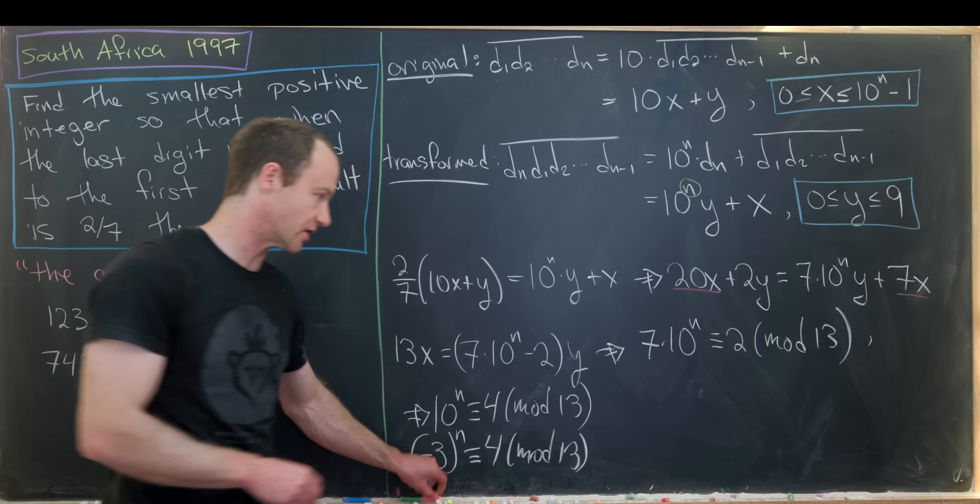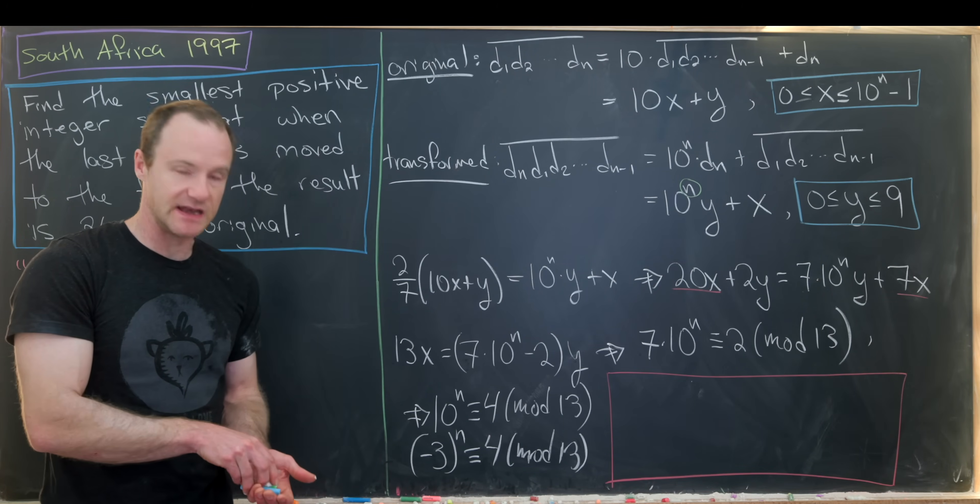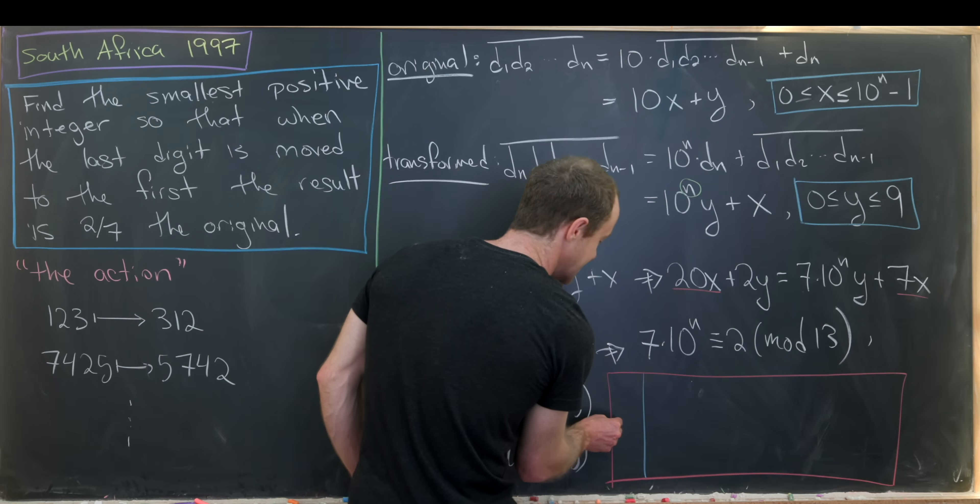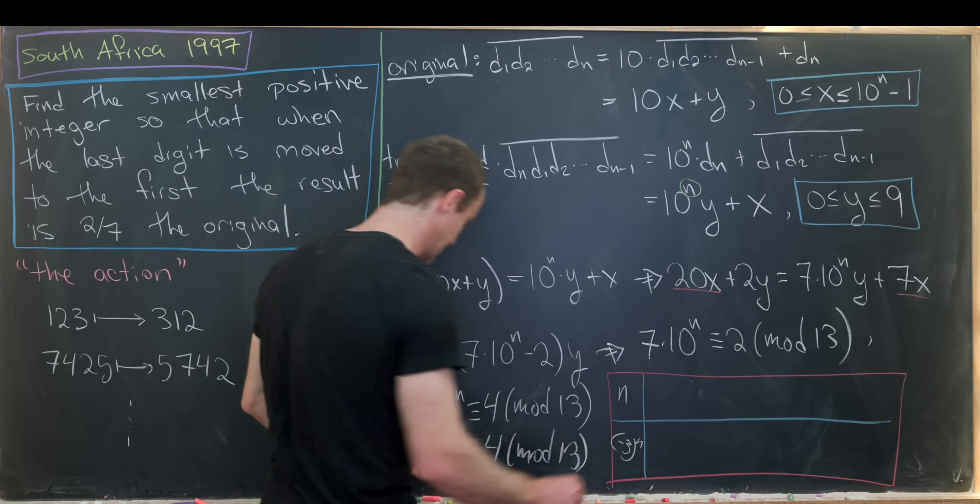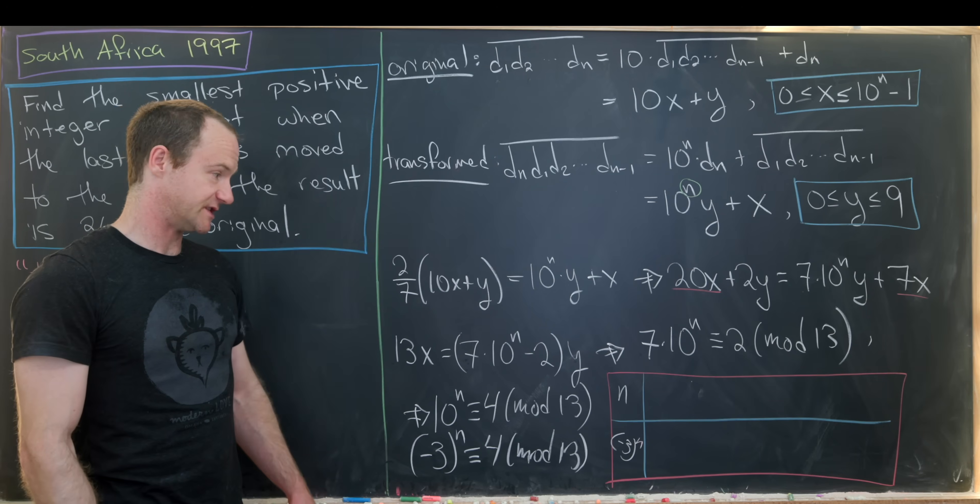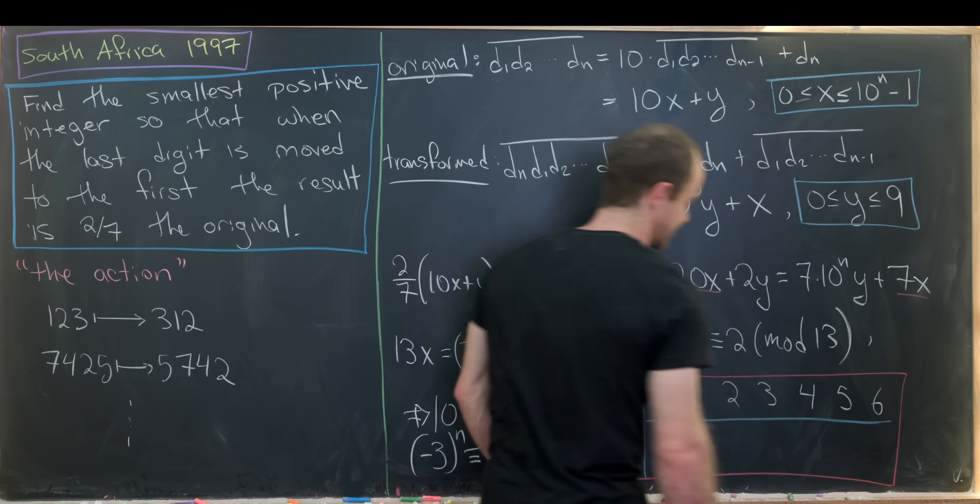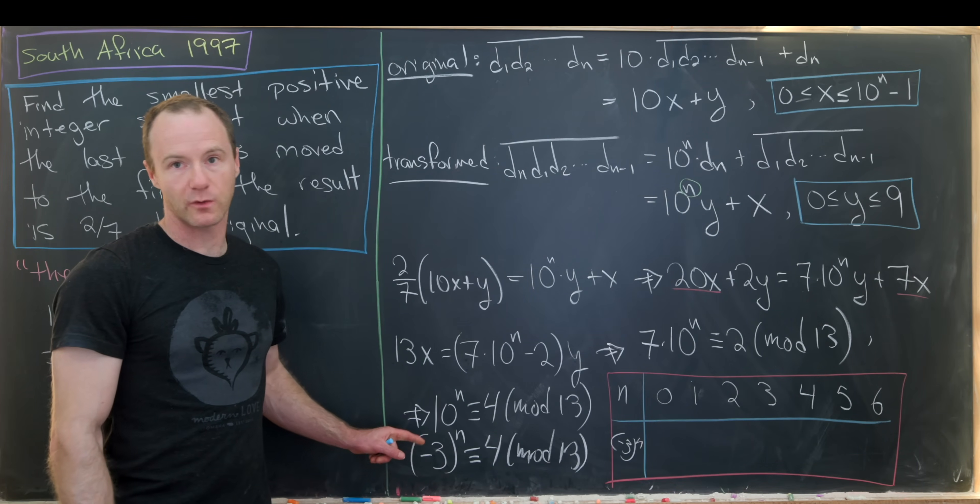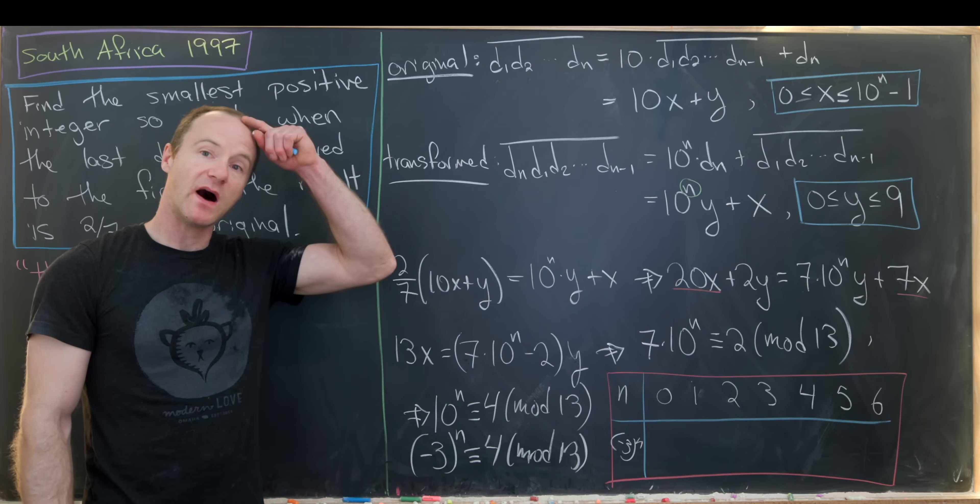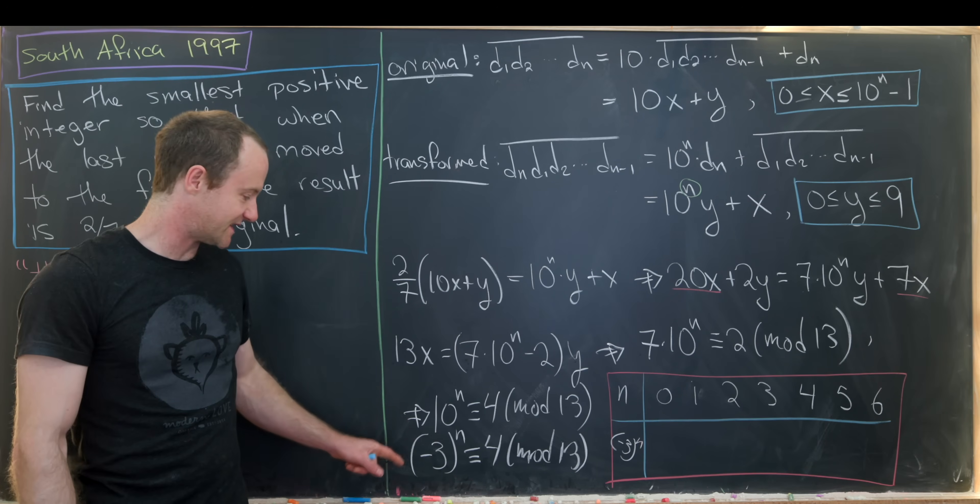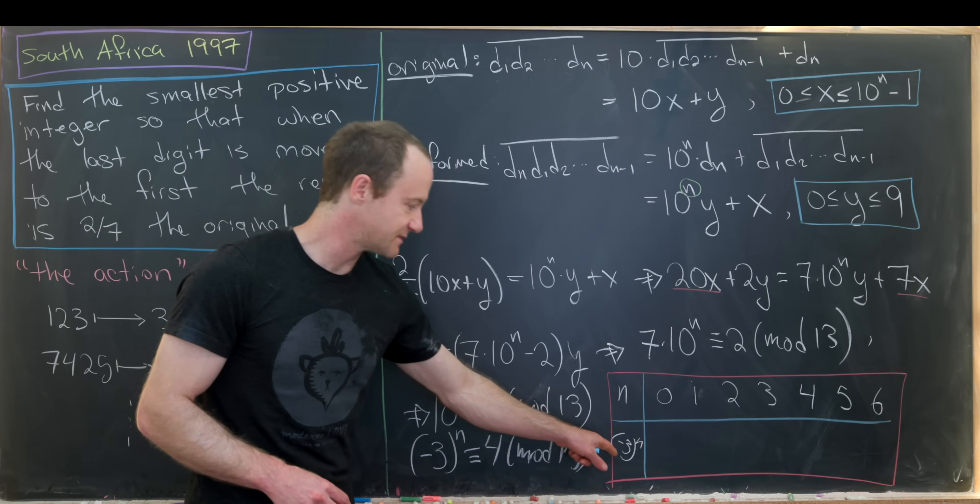So that's starting to look good. And now we're going to make a chart of values of negative 3 to the n and values of n just to get an idea for what the possible values of n are. So we've got n and then we'll have negative 3 to the n mod 13. So we'll reduce mod 13 at every step. So we'll take n 0, 1, 2, 3, 4, 5, 6. Now, technically, we don't know how far we should go. We know that we might have to go as far as the 12th power by Fermat's little theorem. But if you notice, we'll only really have to go to the 6th. And that's because negative 3 is not a primitive root mod 13. But that's kind of getting ahead of ourselves. Let's make this calculation.